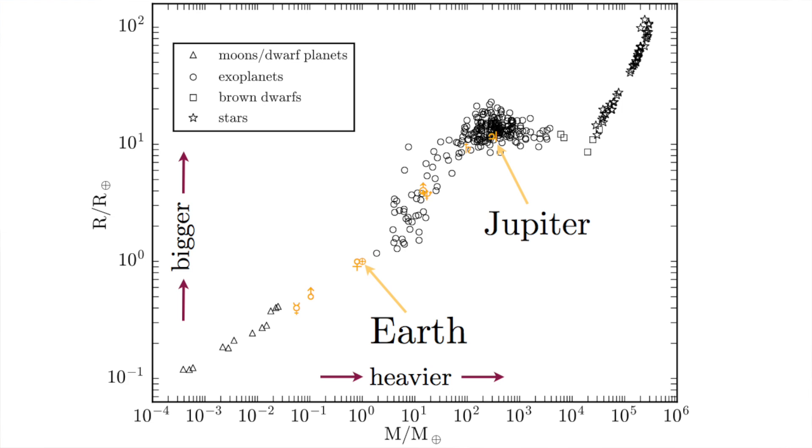If a single mass radius relation does not fit for all, can we use the mass radius relation as a way to classify these objects? To answer the question, we selected hundreds of worlds with precisely measured masses and radii and put them on the plot.